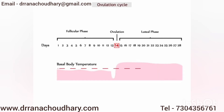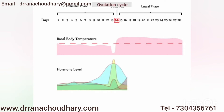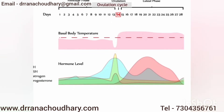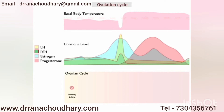This happens because after ovulation there is a change in the hormones. Once you get your periods, there is an increase in the hormone called follicle stimulating hormone or FSH, which causes the growth of the follicle. Once you ovulate, there is an increase in LH and progesterone, which causes a slight increase in the body temperature.